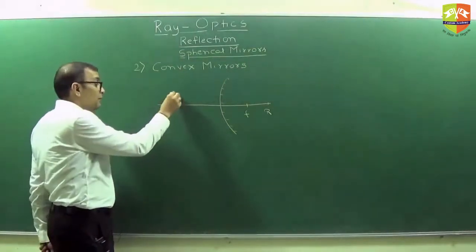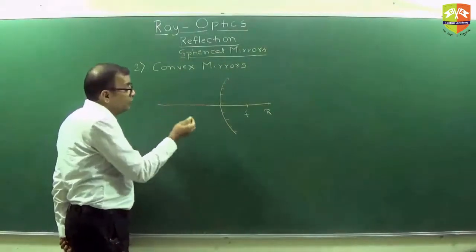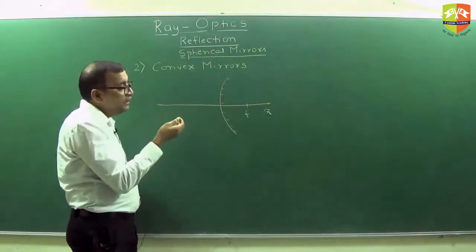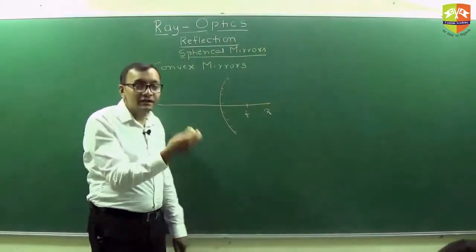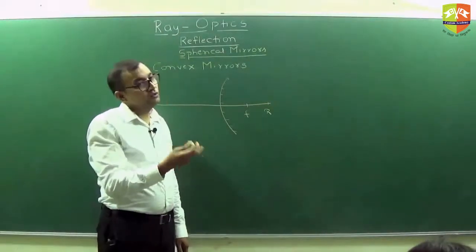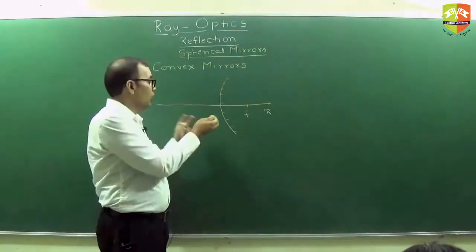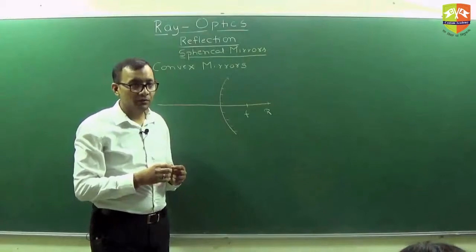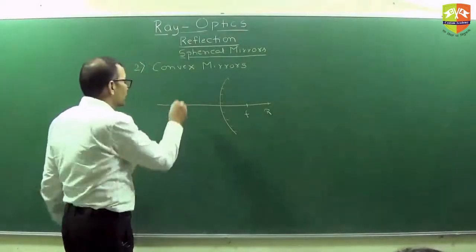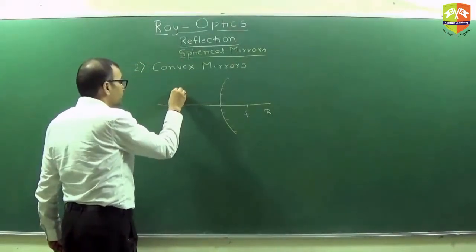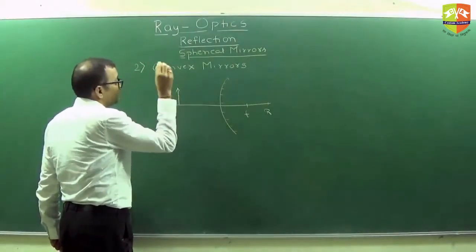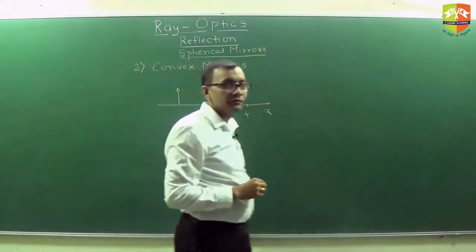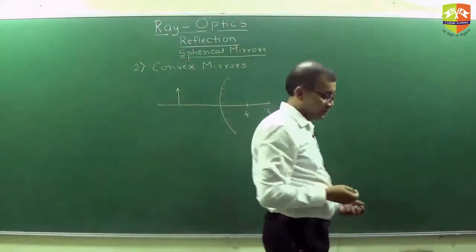This side will be the object. Now there is no F or R here, so there cannot be any cases here — there is just one case: the object wherever you keep. So put an object somewhere and draw its image. Where will its image be?